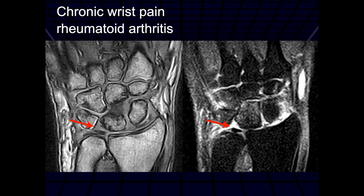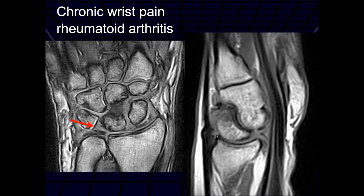One of the problems here is that we're not in the mid-plane of the triangular fibrocartilage in this particular cut. Going to the sagittal image — some of these are impossible to position the way you want because of pain.